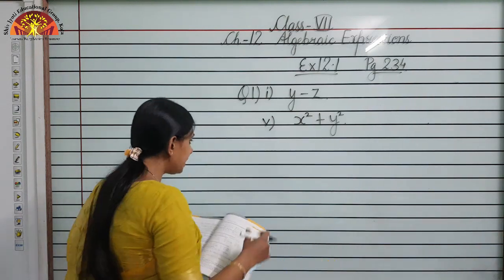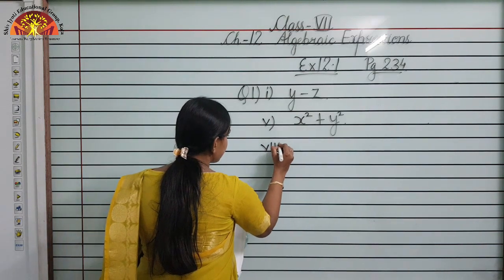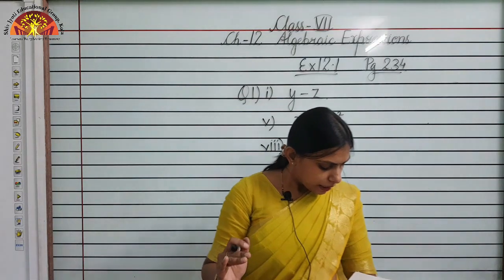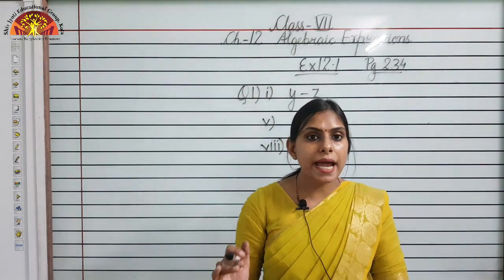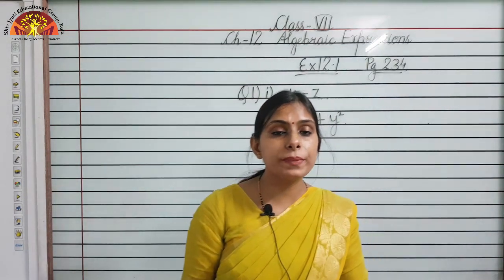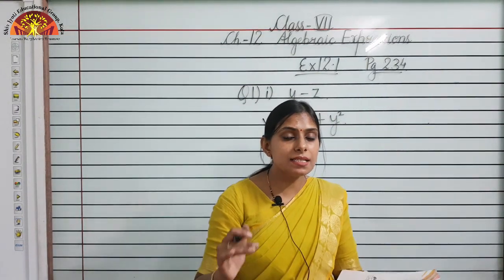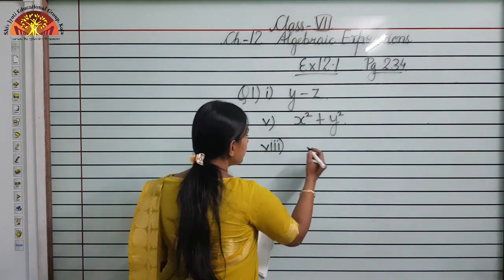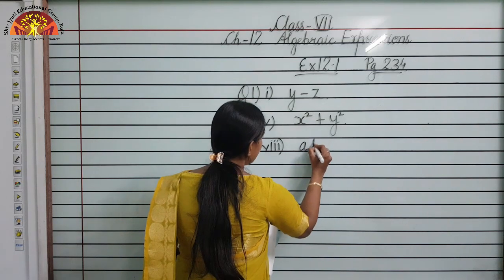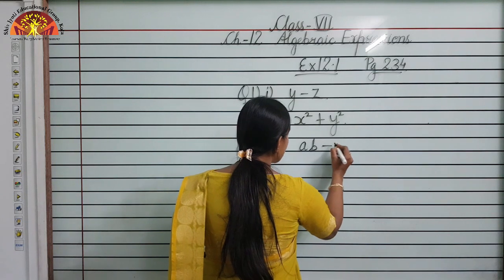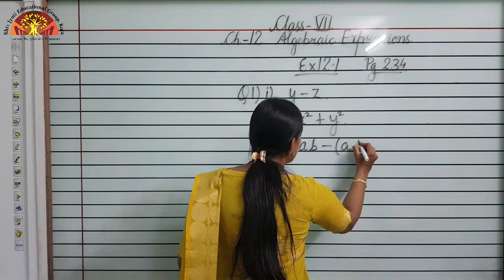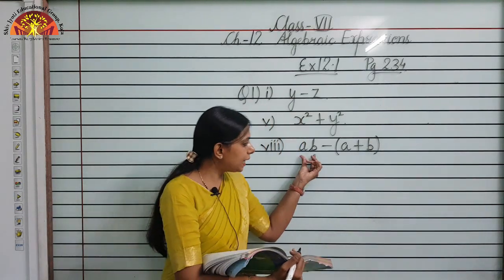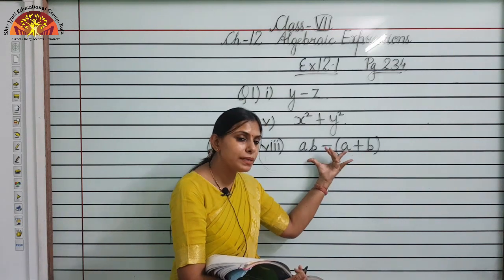Eighth part: the sum of numbers A and B subtracted from their product. The product of A and B is AB, and we subtract the sum (A + B). So the expression is AB minus (A plus B).